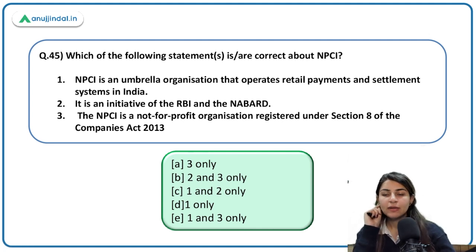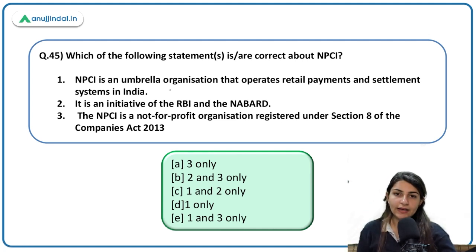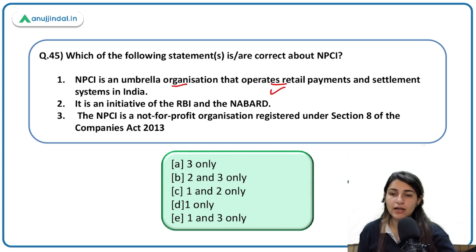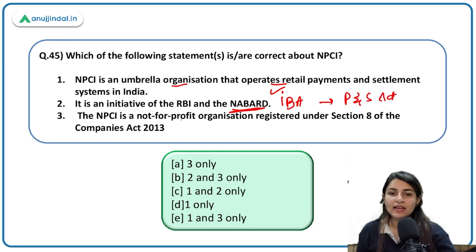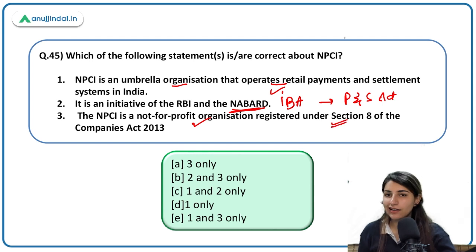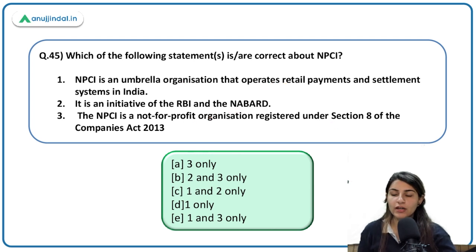Which statements are correct about NPCI? NPCI is an umbrella organization that operates the retail payment and settlement system in India — correct. It is an initiative of RBI and NABARD — incorrect; it is an initiative of RBI and IBA under the Payment and Settlement System Act. NPCI is a non-profit organization registered under Section 8 of the Companies Act — correct.